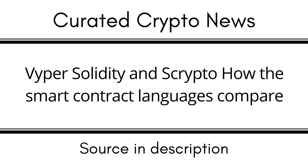Vyper is a contract-oriented, Pythonic programming language for smart contracts designed for use with the EVM. It was designed to improve on Solidity by enhancing security and readability, with a strong focus on the auditability of its code. One of its principles is that humans should be able to read as much Vyper code as possible. Vyper also aims to make it as difficult as possible to write misleading code — simplicity for the reader (the auditor) is more important than simplicity for the writer (the developer). This makes it easier to identify malicious code within a smart contract or dApp.